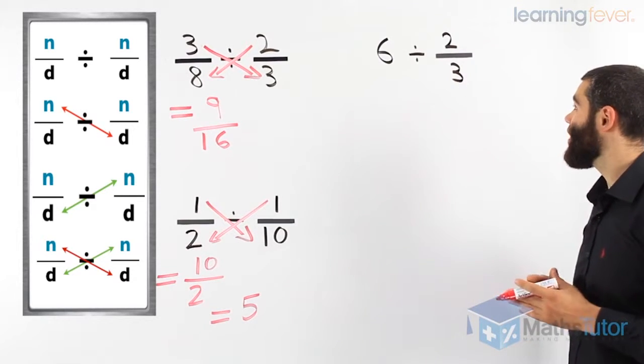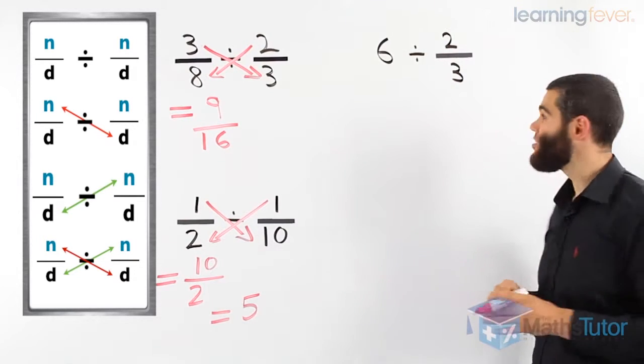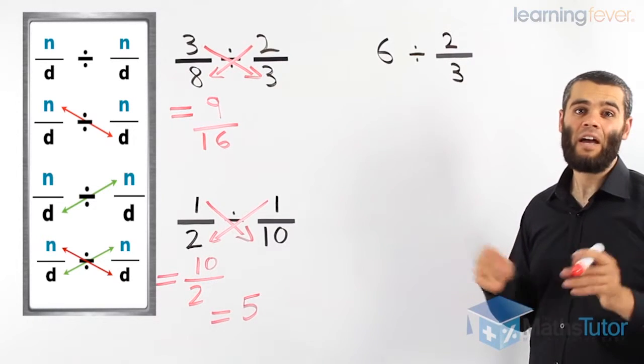Here we have 6 divided by 2 thirds. Hang on, we can tell that 6 is not a fraction, it's a whole number. So how do we do it?